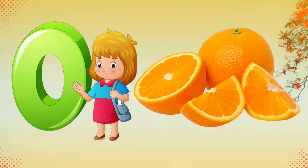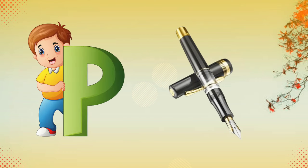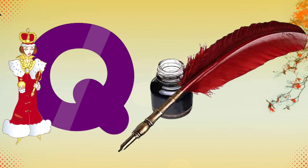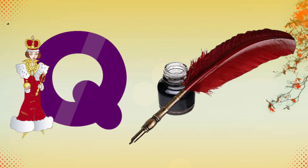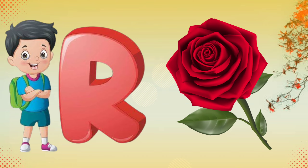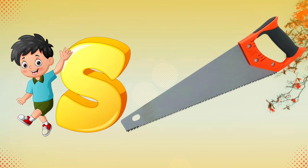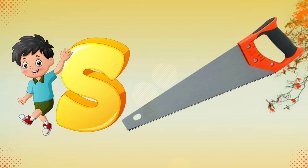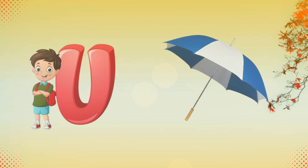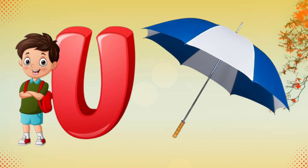O for orange, P for pen, Q for quill, R for rose, S for saw, T for table, U for umbrella.